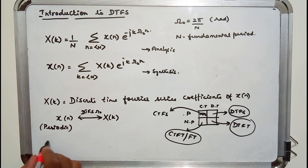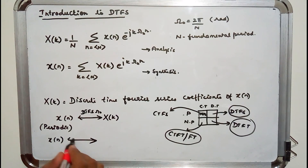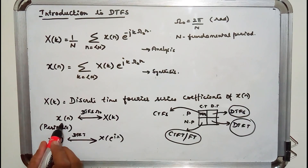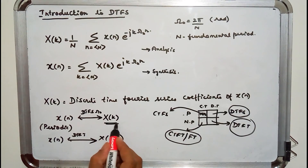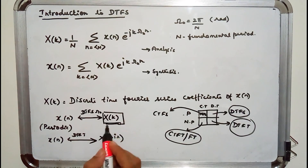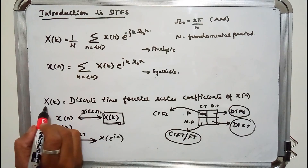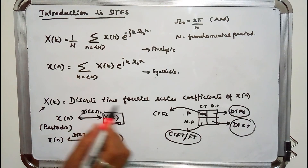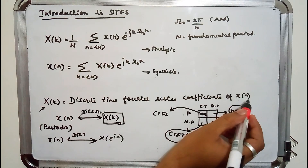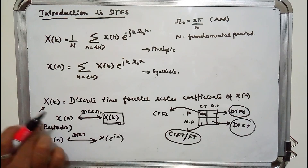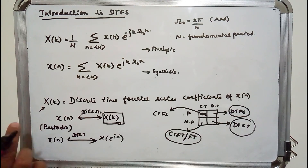If a signal is discrete and non-periodic, its frequency domain representation is given by DTFT, written as x of e power j omega. Since our signal is periodic, it is represented by x of k. So x of k is the frequency domain representation of a discrete time periodic signal — it gives the discrete time Fourier series coefficients of x of n.